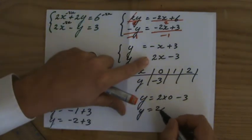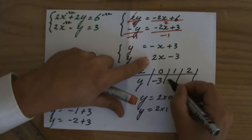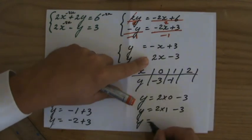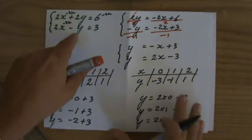Y is 2 times 1 minus 3. 2 minus 3, minus 1. And for x is 2, y is 2 times 2 minus 3, 4 minus 3, which is 1. Got my three points.